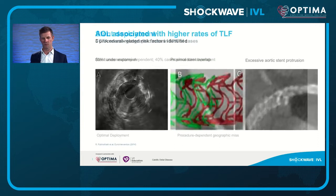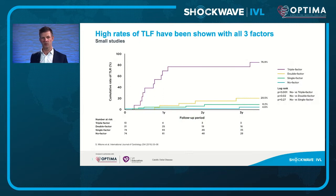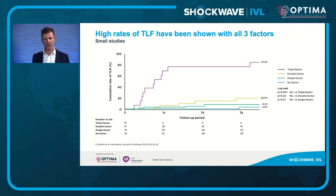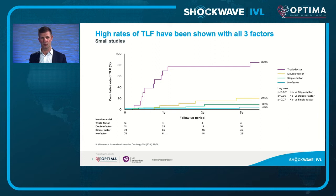Kimoto's group identified three main drivers of stent failure: stent under-expansion, proximal stent overlap, and excessive aortic stent protrusion. If you have a combination of all three, target lesion revascularization or failure occurs at around 70% at one year — hugely impactful on our patients.